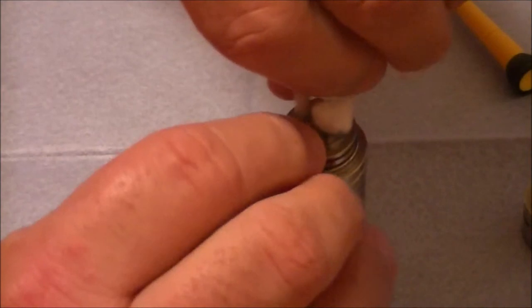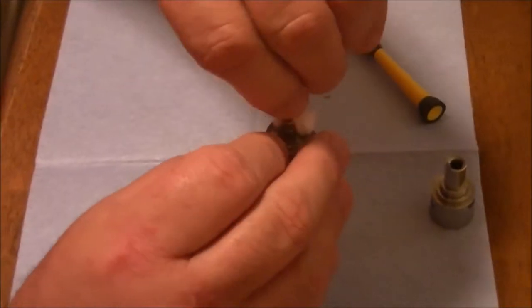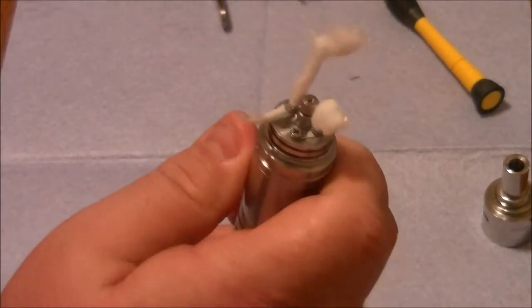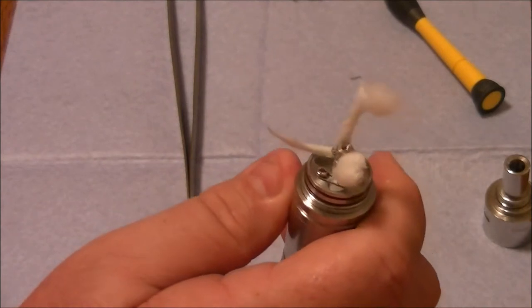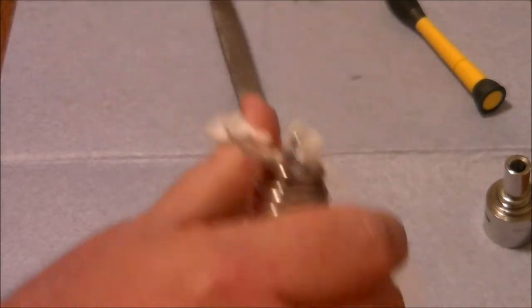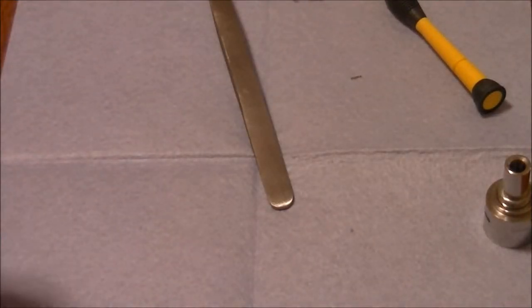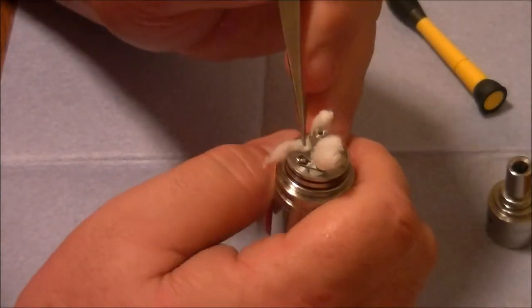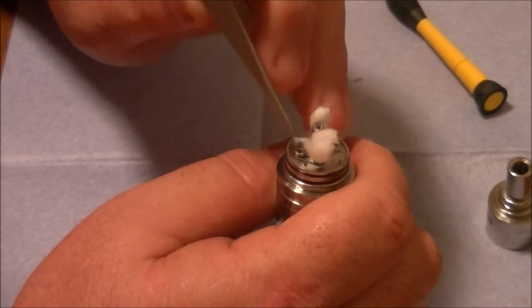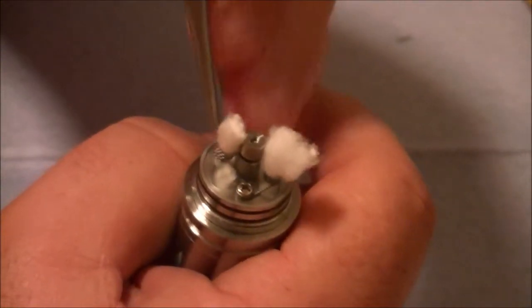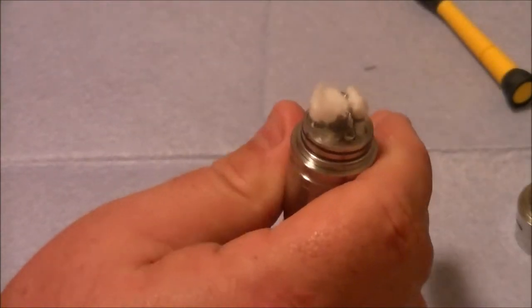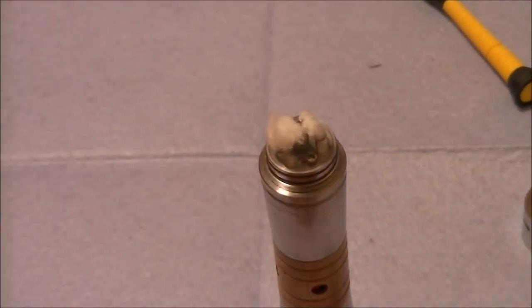Now we will do the same on the other side. Twist and pull. And then clip that off to about the same level the other was. Use our tweezers to push this in and fluff. Pull this over this way and this over this way. Get some juice.